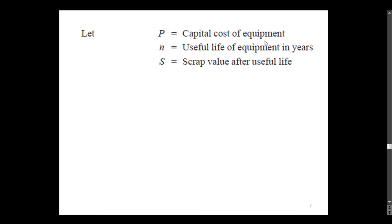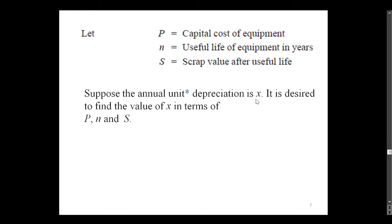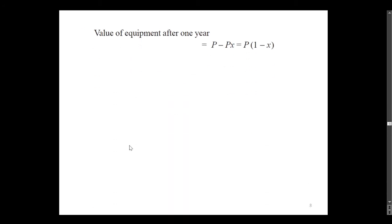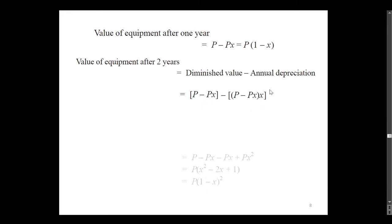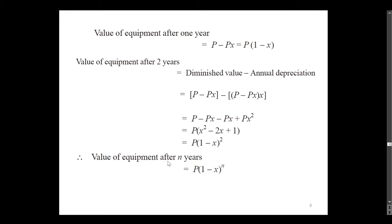Let P be the capital cost of the equipment, N be the useful life of the equipment in years, and S be the scrap value after useful life. Suppose the annual unit depreciation is X. It is desired to find the value of X in terms of P, N, and S. The value of equipment after one year is P minus PX, that is P(1 - X). The value after the second year is P(1 - X) squared. Therefore, the value of the equipment after N years is equal to P(1 - X) raised to N.